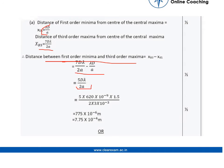Now in the question, the value of λ is 620 nanometers and d is 1.5 meters. The value of a is 3 × 10⁻³ meters. So solving it, we get the distance between first order minima and third order maxima is 7.75 × 10⁻⁴ meters.